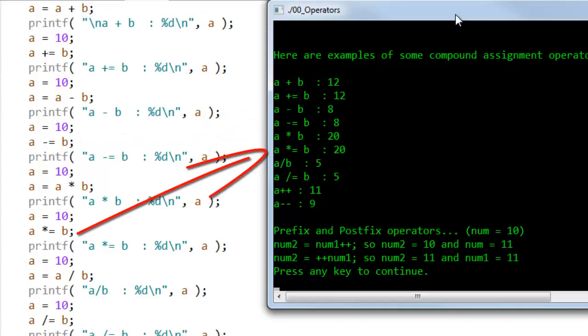A times equals B. Again A equals 10, B equals 2, the result is 20.